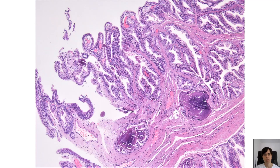On a closer view, we notice there is also some intermixed benign urothelium focally, and we can better appreciate the papillary nature of the lesion — these delicate papillary fronds with thin true fibrovascular cores. Another thing to notice is that there is no significant inflammation in the subjacent stroma.